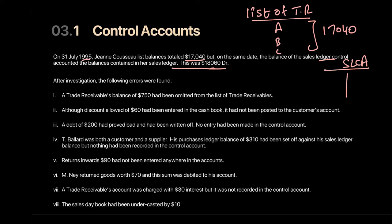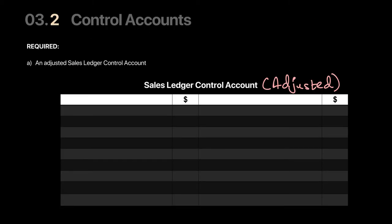Our job is to correct these errors. First, we'll draw an adjusted sales ledger control account. 'Adjusted' means the control account has already been drawn and we're just adjusting it. We'll start with our balance of 18,060 on the debit side, since sales ledger control account refers to trade receivables — they're assets and come on the debit side.